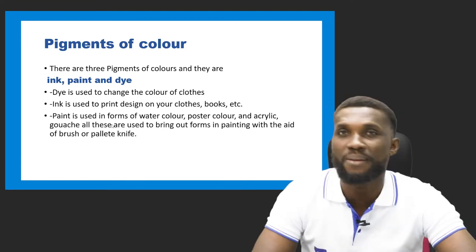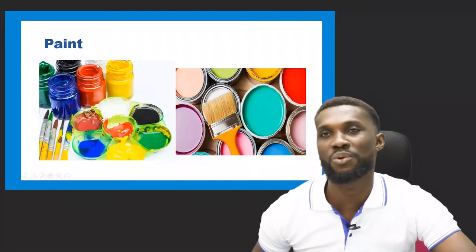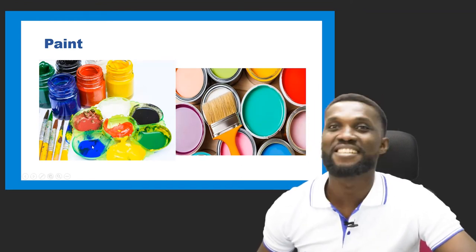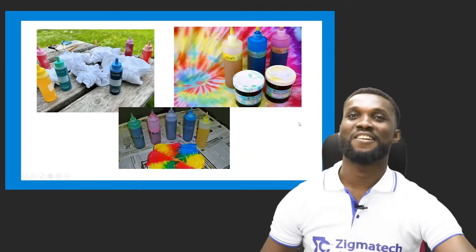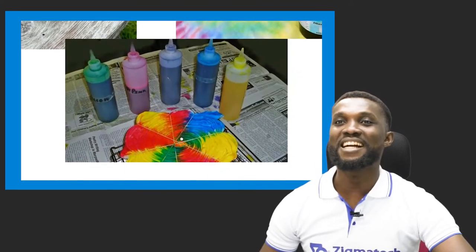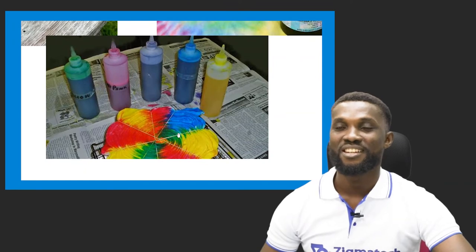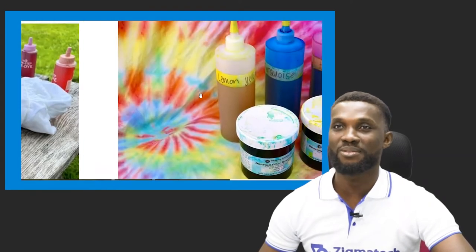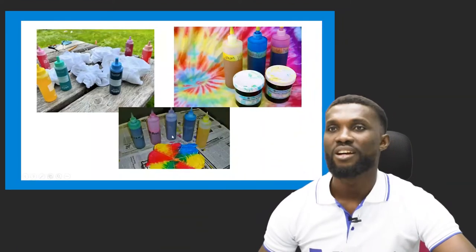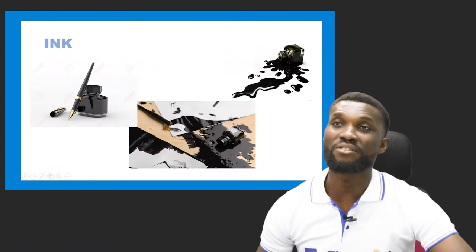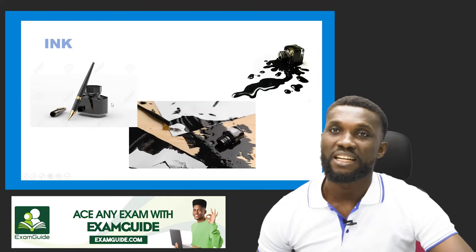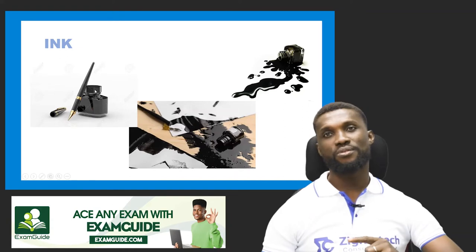Whenever asked, what are the three pigments of color? Say: ink, paint, and dye. Now, these are paints — all these are paints. This is a tie and dye fabric being created. This is the end product — this is done with dye. We have liquid dye and powdered dye. And this is ink — we have different colors of ink: black, blue, red, magenta, to mention but a few. These are the three major pigments of color.